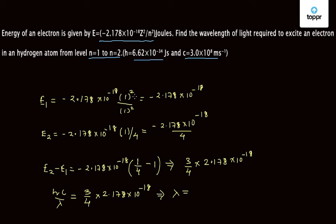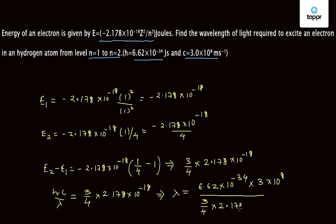Solving for lambda: λ = hc / (3/4 × 2.178 × 10⁻¹⁸) = (6.62 × 10⁻³⁴ × 3 × 10⁸) / (3/4 × 2.178 × 10⁻¹⁸). Solving this gives λ = 1.214 × 10⁻⁷ meters, approximately 1.24 × 10⁻⁷ meters. So the wavelength of light corresponding to the transition in this question is 1.24 × 10⁻⁷ meters.